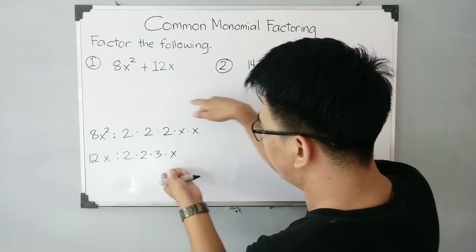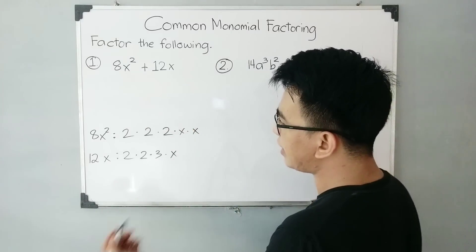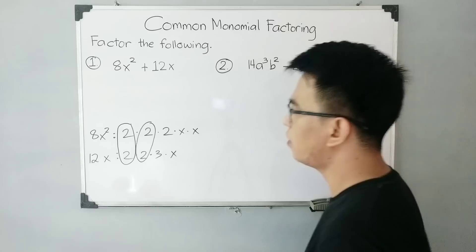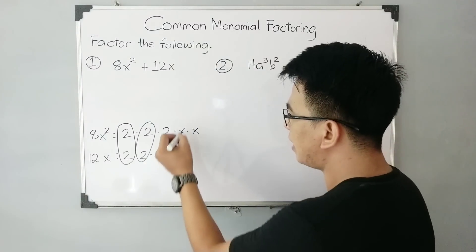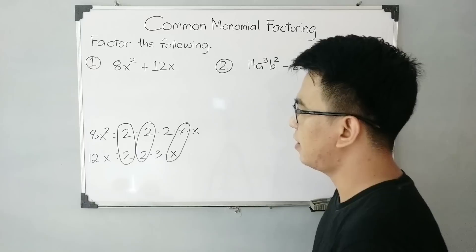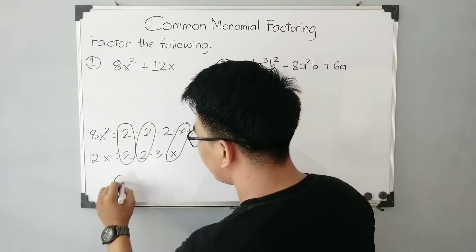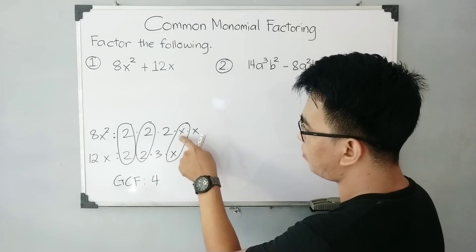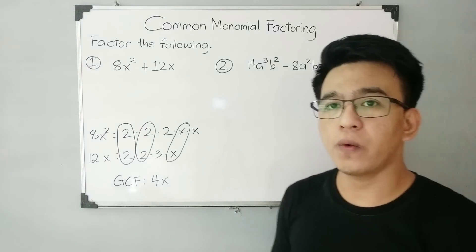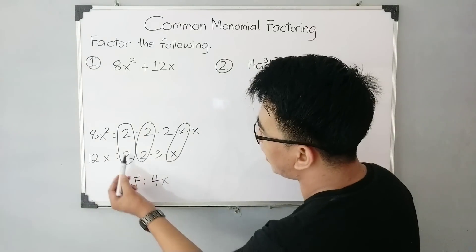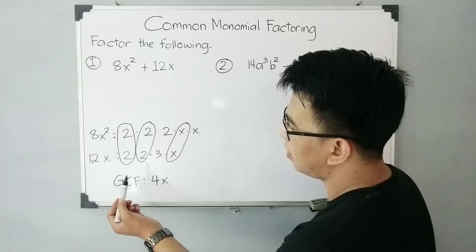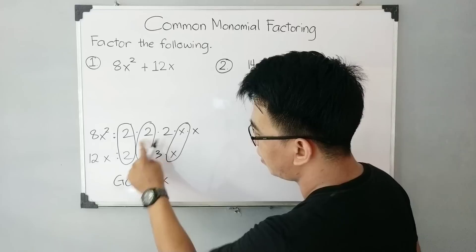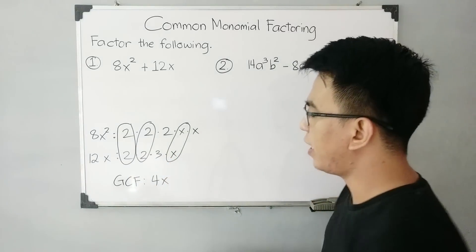Look at the prime factors of each term. As you can see, they have at least two common pairs of 2, and one common variable x. Meaning their GCF is equal to 2 times 2, which is 4, and then the variable x. Since we have two pairs of common prime factor 2 and the variable, I multiplied 2 times 2 to get 4 and then copied x. That's why 4x is our greatest common factor.